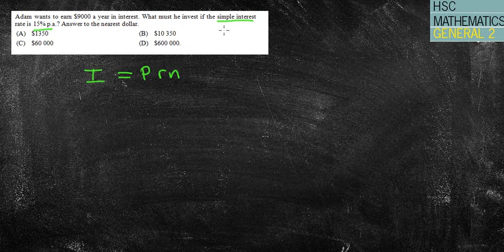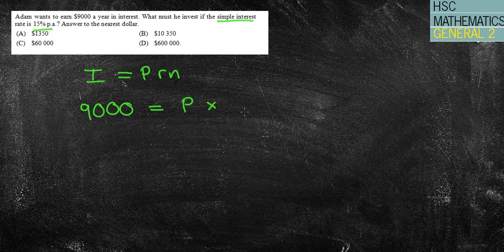Now we want to earn $9,000 a year, okay, so that's each year, so $9,000. We don't know how much we want to invest. We do know that my interest rate is 0.15, and it's per year, so I can just do it for one year.